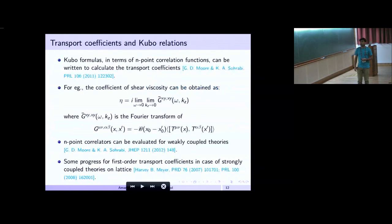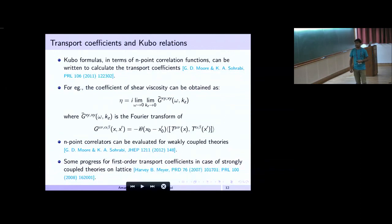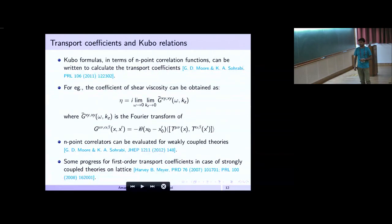General endpoint correlators can also be evaluated for weakly coupled theory. There has also been progress for first-order transport coefficients in strongly coupled theories on the lattice as well. Papers by Harvey Meyer on shear and bulk viscosity are relevant references here.